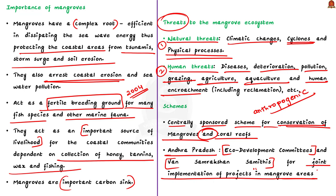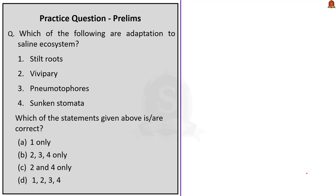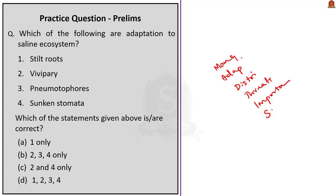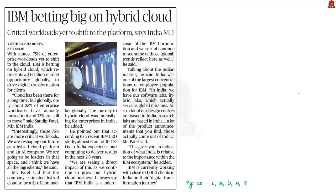So these are some of the measures taken by governments to protect mangroves. With this, we have come to the end of the discussion. In this discussion, we saw about mangroves, mangrove adaptations, their distribution, threats faced by mangroves, the importance of mangroves, and the steps taken by government to protect mangroves. Now let us move on to the next article.